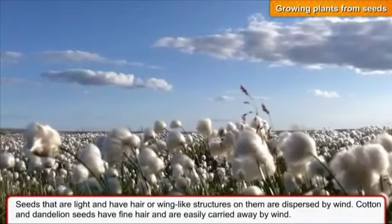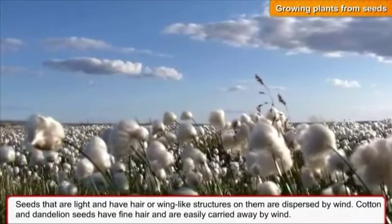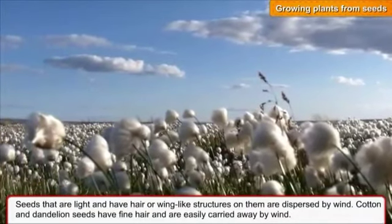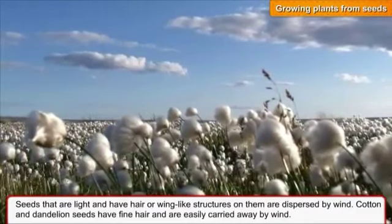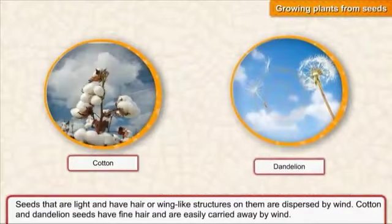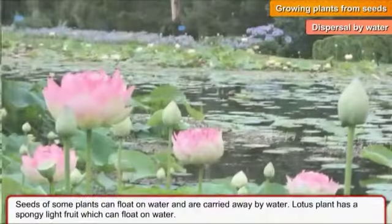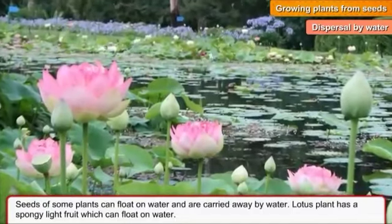Dispersal by wind: seeds that are light and have hair or wing-like structures on them are dispersed by wind. Cotton and dandelion seeds have fine hair and are easily carried away by wind.